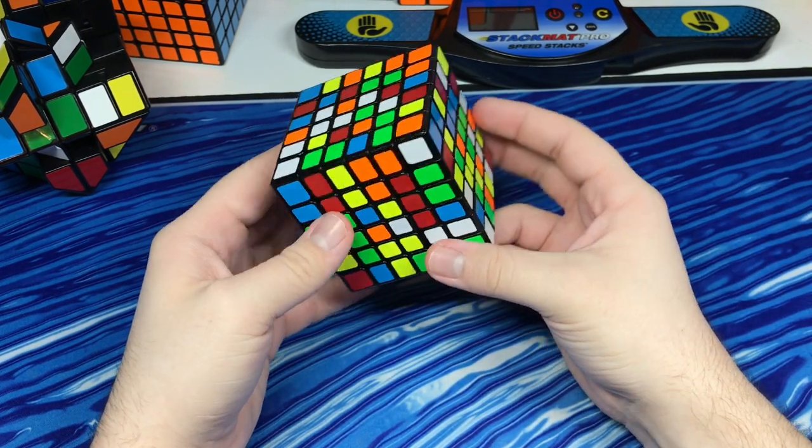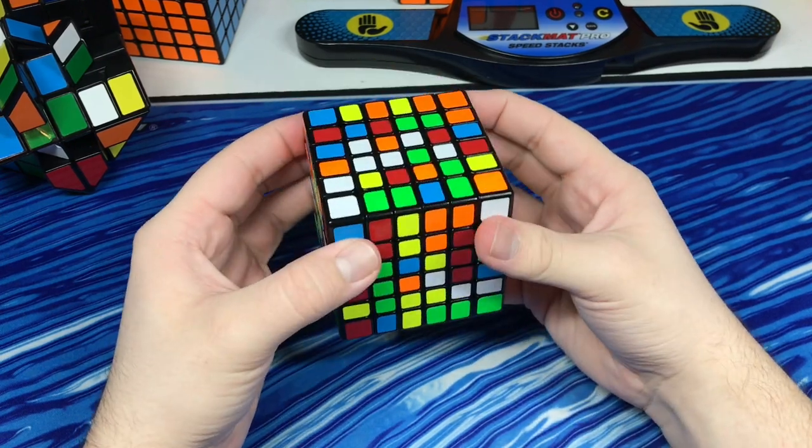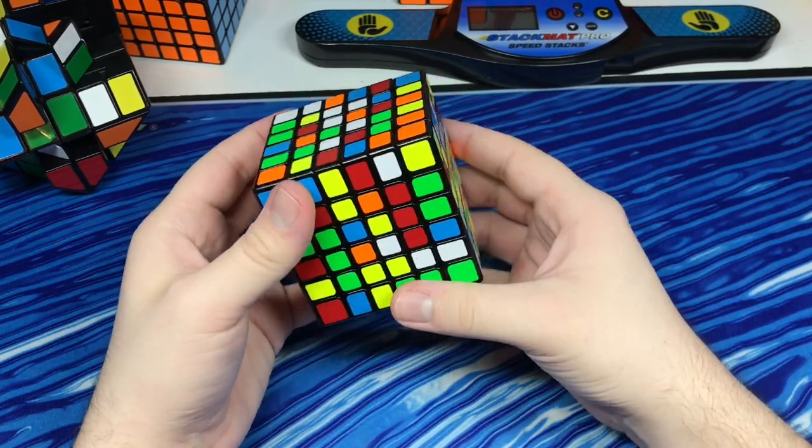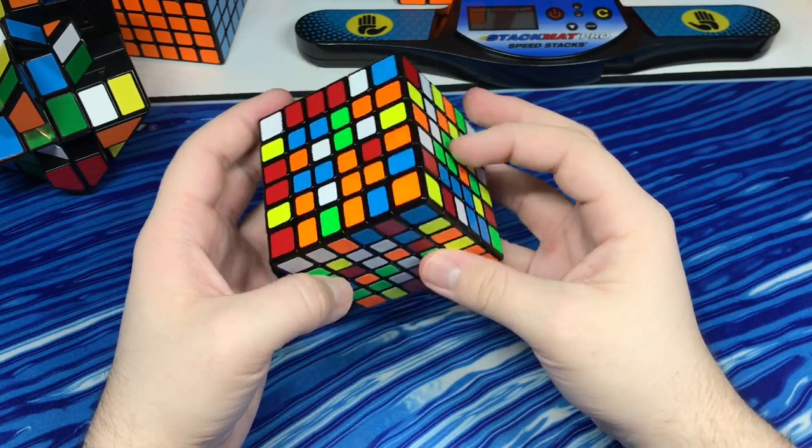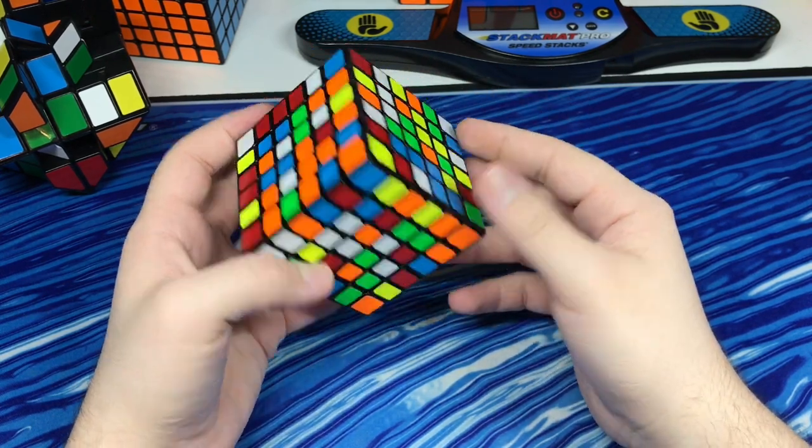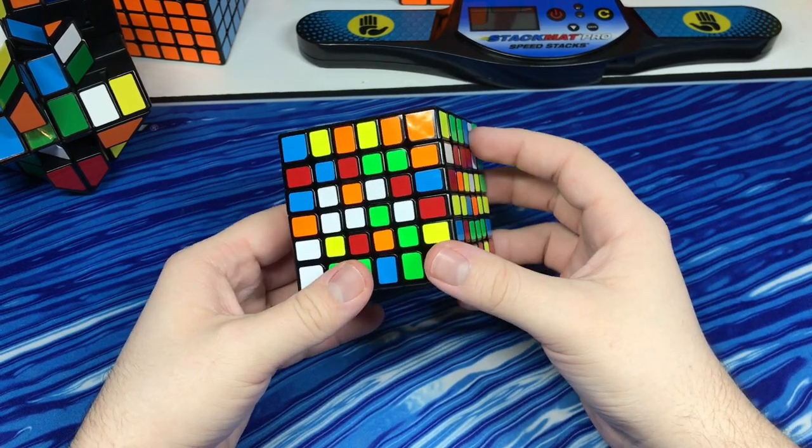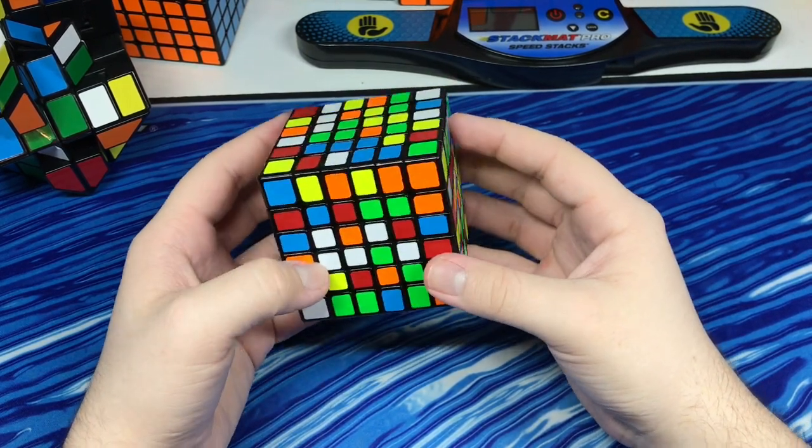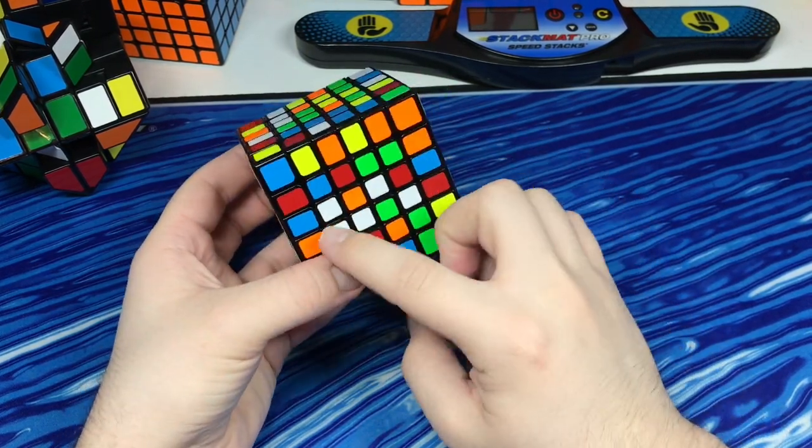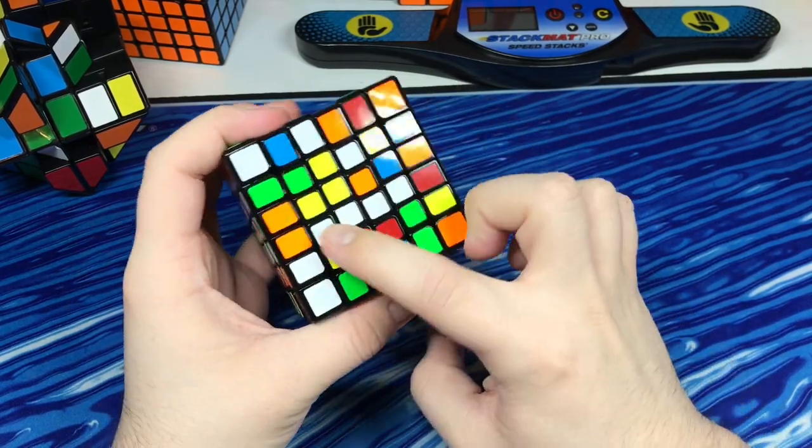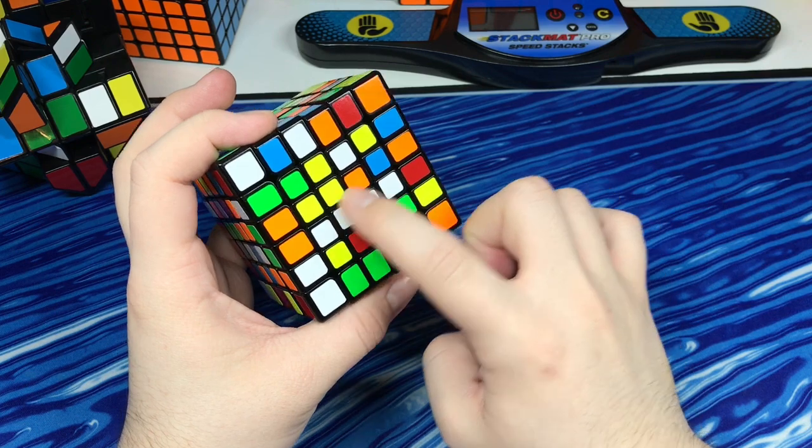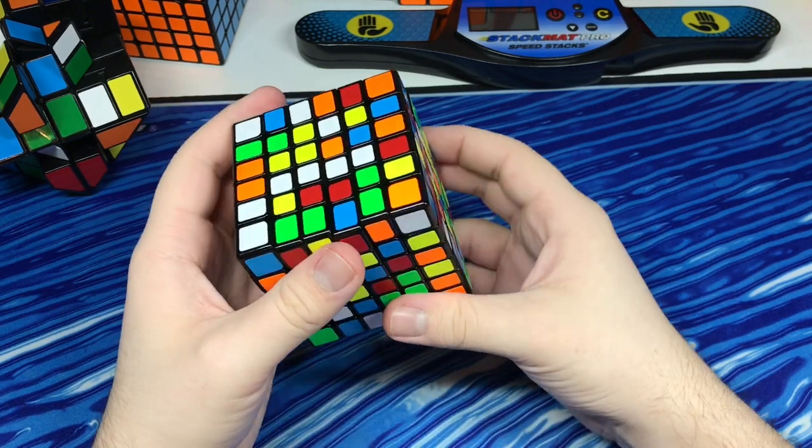So here we are. Since this is kind of a beginner tutorial, I'll start with the white. For 6x6, 7x7, and up, the basic idea of center building is in bars. It's like you make one bar, two bar, three bar, and then four, and then the center is done.